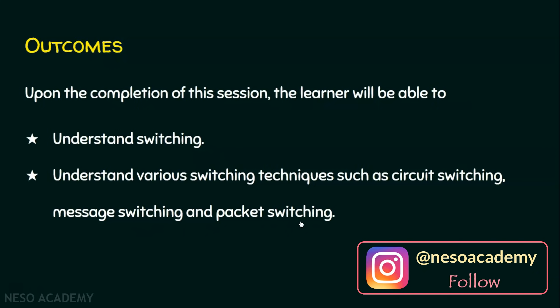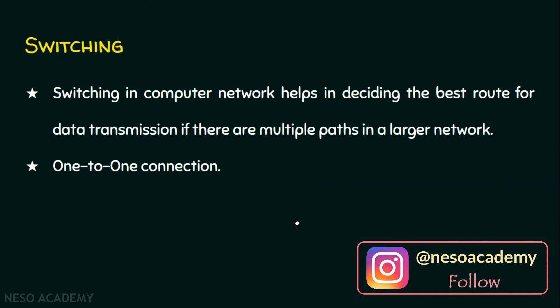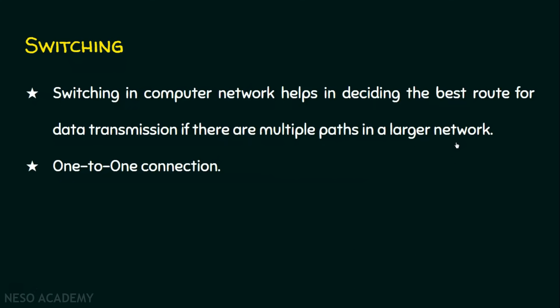Switching in a computer network helps in deciding the best route for data transmission if there are multiple paths in a larger network. For example, on the internet, multiple paths exist between the source and the destination, and switching helps in deciding the best route. It should also provide the feel of a one-to-one connection.